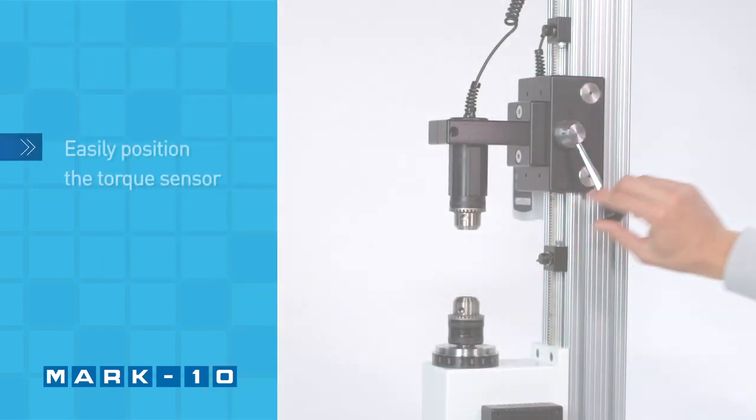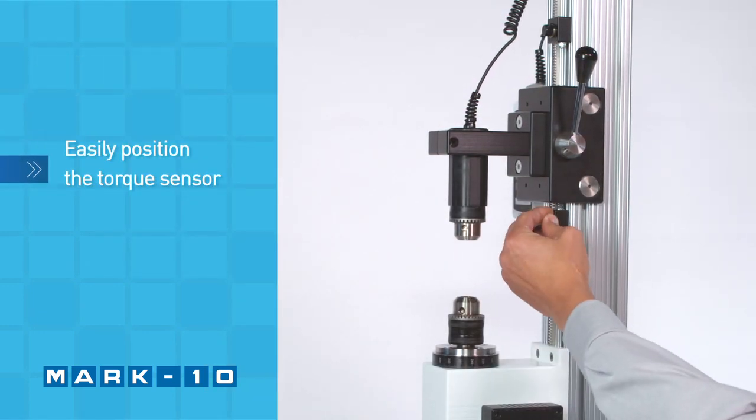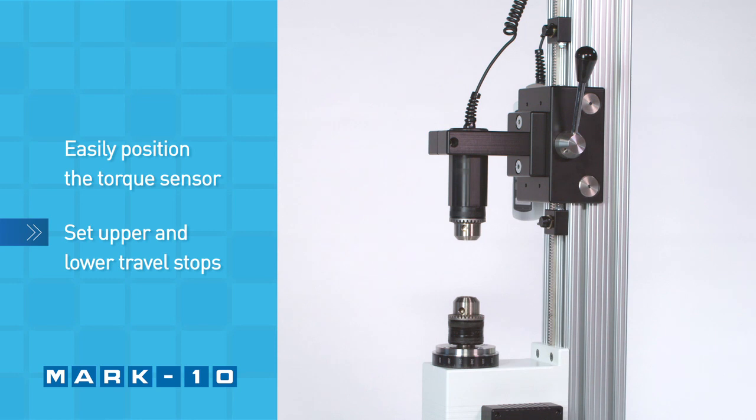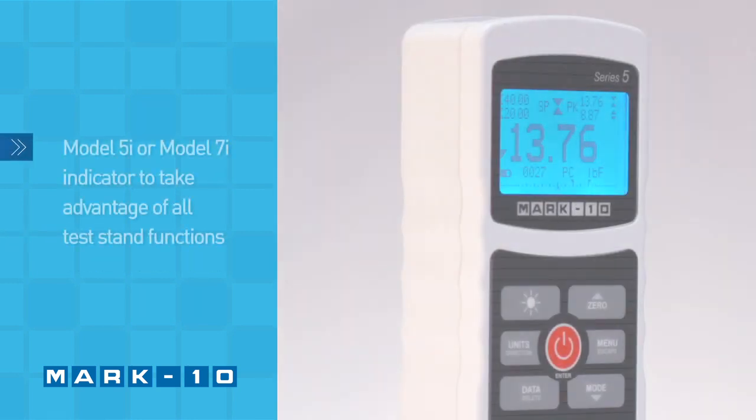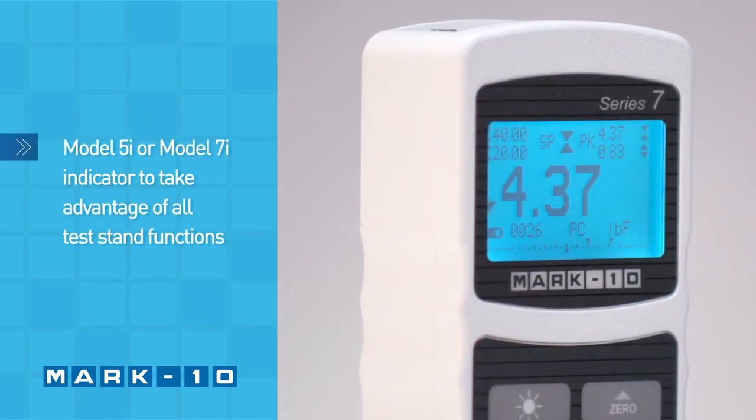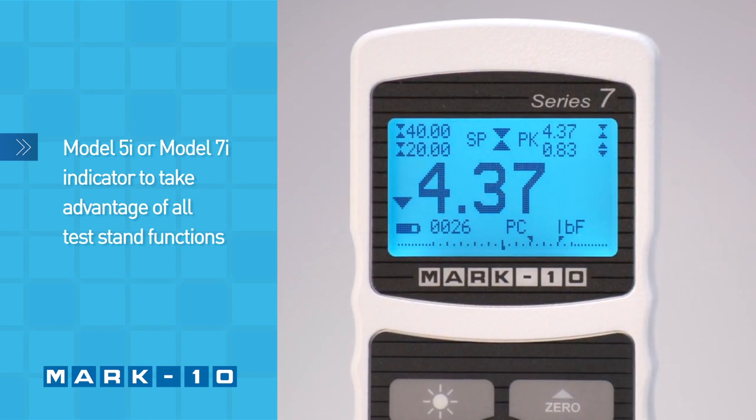Easily position the torque sensor to engage and disengage the sample. Upper and lower travel stops may also be set. Consider a model 5i or 7i indicator to take advantage of all test stand functions.